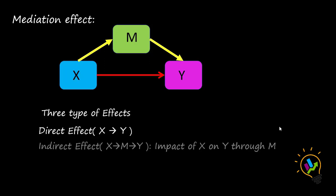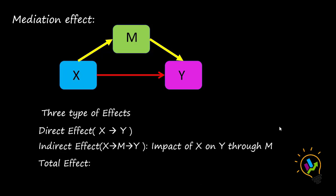The second important observation is the indirect effect — how much is X impacting Y through M. This is called indirect effect, and here we come to know how much the mediating variable is impacting between X and Y. The third effect is the total effect — how much impact X is having on Y as a total. So direct effect, indirect effect, and total effect must all be observed in the model.